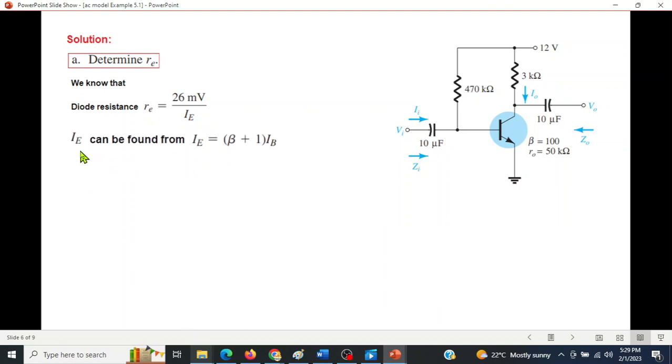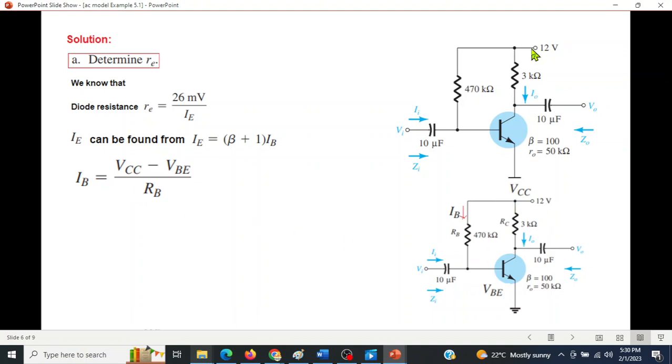We have to find I_B, so I_E can be written as (β + 1)I_B. I_B can be found from this formula. In the same circuit I'm adding V_CC which is 12 volts, this is I_B current and this is V_BE. From this circuit you can see that I_B = (V_CC - V_BE) / R_B.